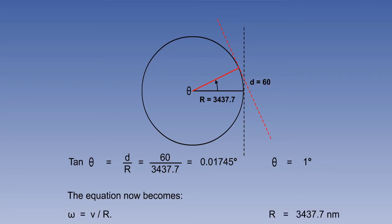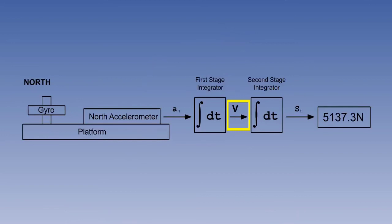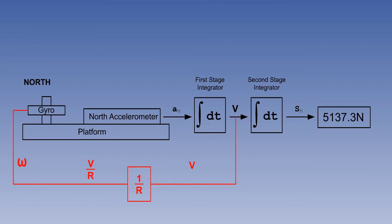We know r, the radius of the earth — its average value is 3,437.7 nautical miles. To find omega, we need v, but we already have it: it is coming out of the first stage north-south integrator. All we have to do is take a parallel value out of this source and divide it by r, then feed it back to the gyro. There are, in fact, two feedback loops: one in the north channel, the V over R loop, which keeps the platform level as the aircraft flies around the earth northwards or southwards; and a U over R loop in the east channel to keep the platform level as the aircraft flies around the earth eastwards or westwards.